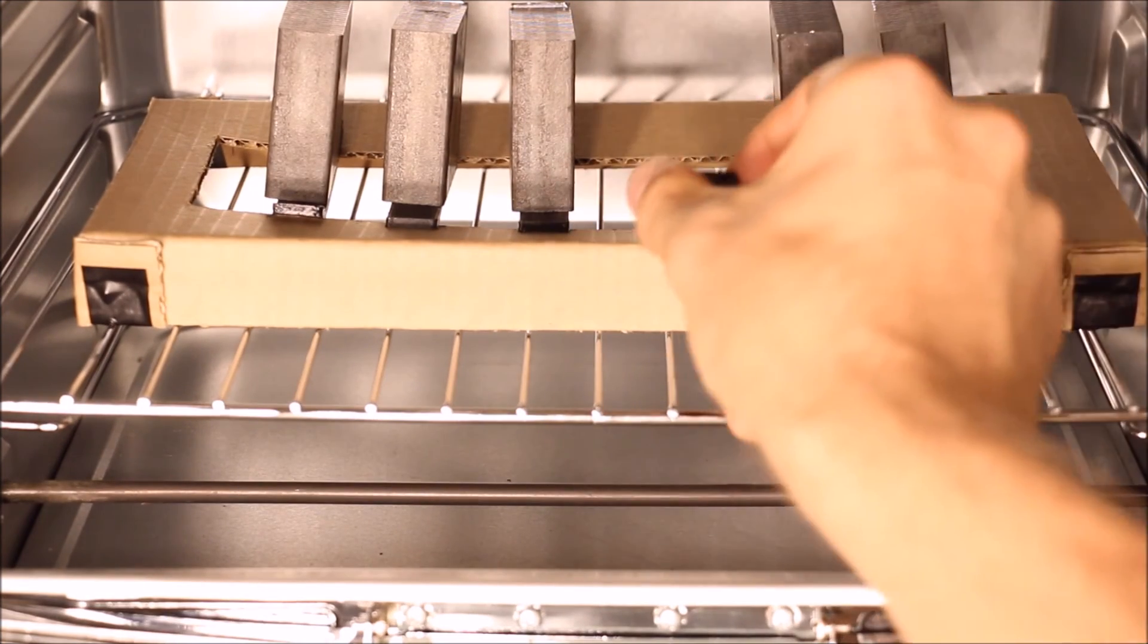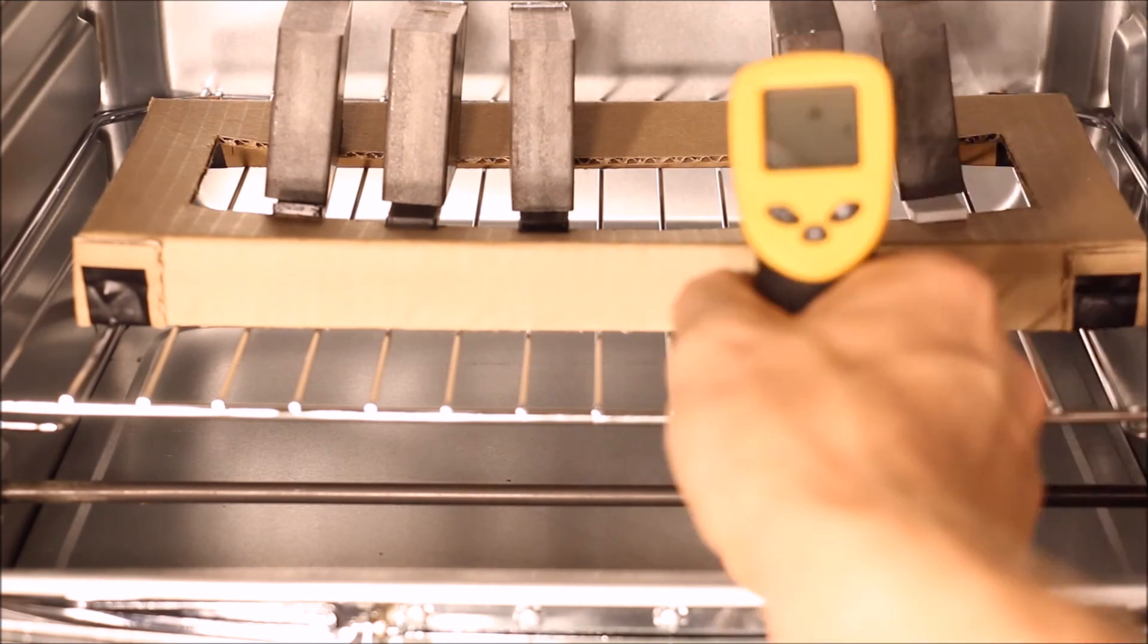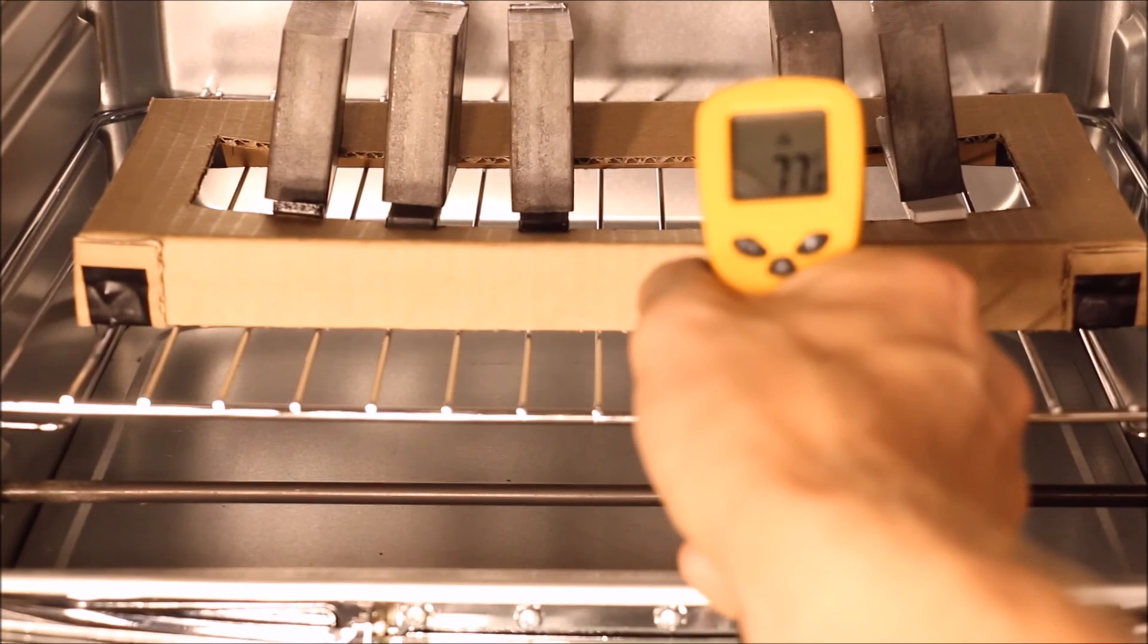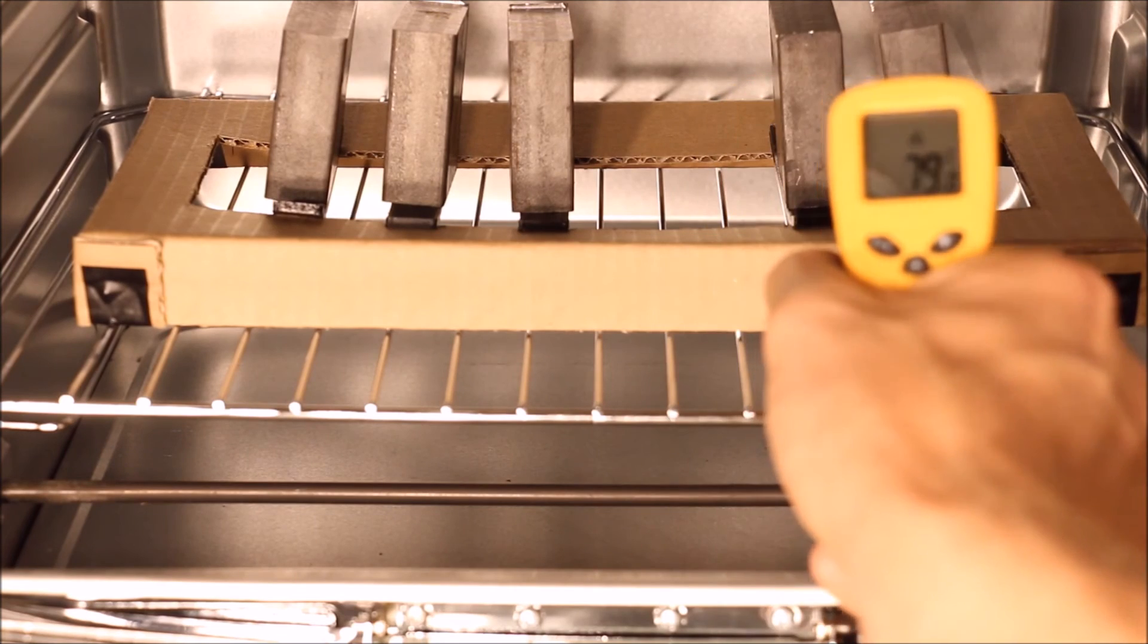You can see there's the warping for it. So I can see significant warping in Orb Polymer and the Hobby King. There's some in the E-Sun and the Maker Geeks has some as well, especially in the back. The temperature in the oven is approaching 80 degrees C.